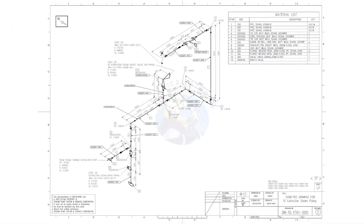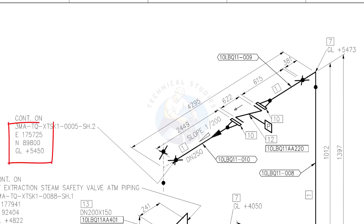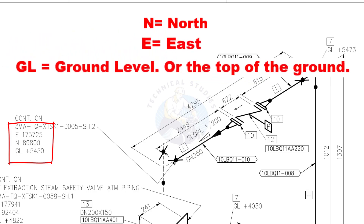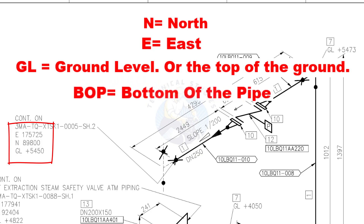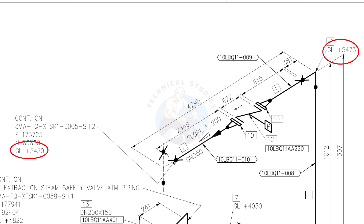Let us go to the drawing. This drawing is the continuation of the previous drawing. See the coordinates: N means north, E means east, and GL means ground level — the top of the ground. GL and BOP are the same here; BOP means bottom of pipe. D250 means the nominal diameter of the pipe is 250, which we already know equals 10-inch NB. Slope 1 to 200 means the pipe is sloped 1 millimeter in every 200 millimeters — so for a 1,000 mm pipe, the slope is 5 millimeters. Compare these two levels and write down the slope in the comment box.